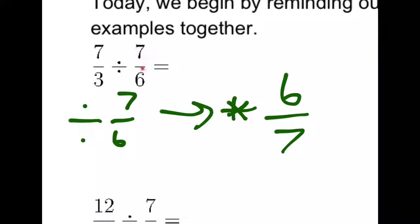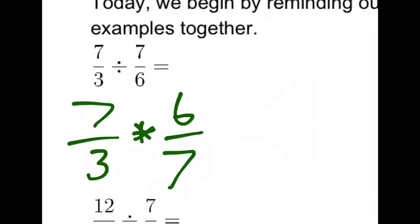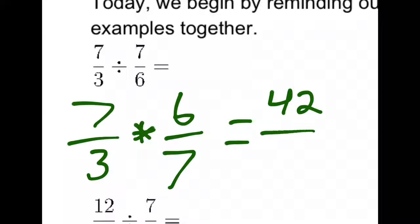So instead of dividing by 7 over 6, we're going to multiply by 6 over 7. This gives us 7 times 6 or 42 across the top and 3 times 7 or 21 across the bottom.